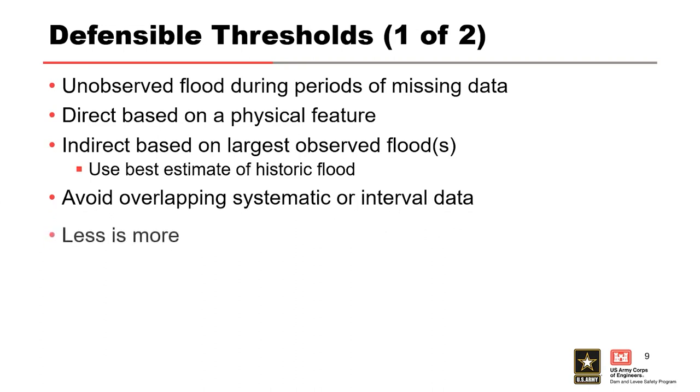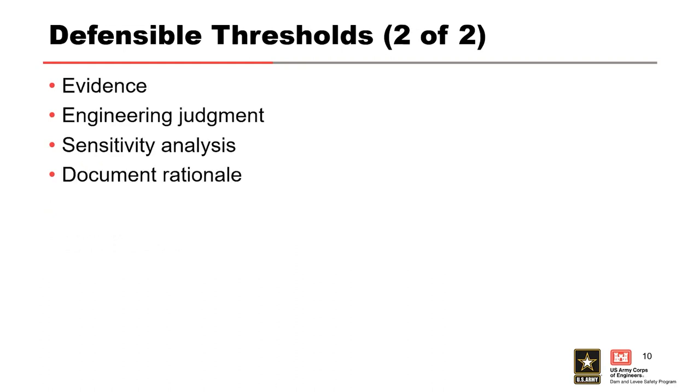A best practice is to avoid overlapping perception thresholds with observed systematic and interval data. And finally, less is more. Don't get carried away by trying to model too many thresholds. Here are a few additional strategies for developing defensible perception thresholds. Trust the evidence and use your engineering judgment. Sensitivity analysis is always a good way to explore how much the frequency curve would change if you were to select a different threshold, higher or lower, longer or shorter. And finally document the rationale for the threshold you selected, even when it's subjective or uncertain, you still want to document your thoughts and how you got where you got.